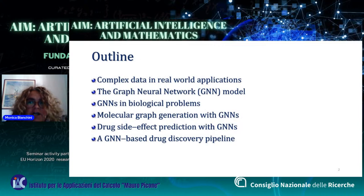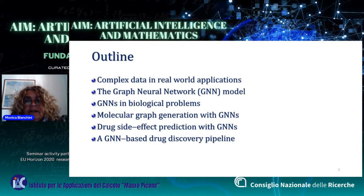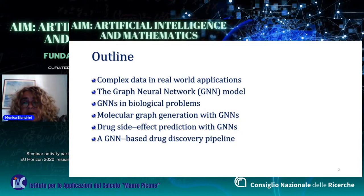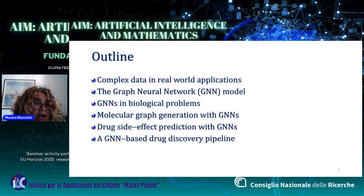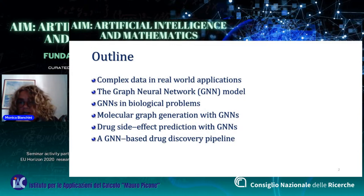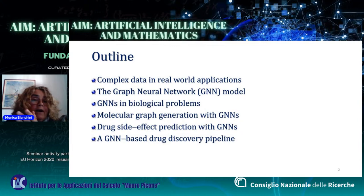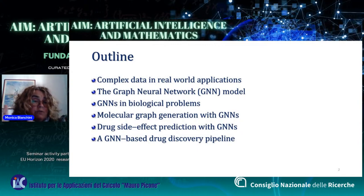I will begin by sketching how many problems in the real world involve data that are not plain, but rather structured — that means composed of some basic entities which are related among them based on different relationships that cannot be disregarded. Then I will focus on the graph neural network model originally conceived here in Siena in 2009. At the very beginning, this model did not particularly attract the interest of the community of artificial intelligence, which probably did not grasp the potential of GNNs, thinking they were yet another architecture similar to existing ones for structured data processing.